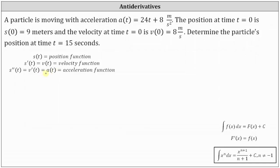Because we are given the acceleration function, if we find the antiderivative of the acceleration function we can recover the velocity function, since the acceleration function is equal to the derivative of the velocity function. When we evaluate an antiderivative integral, we are undoing the derivative process. So we'll begin by determining the antiderivative integral of the acceleration function, which equals the antiderivative integral of 24t + 8.